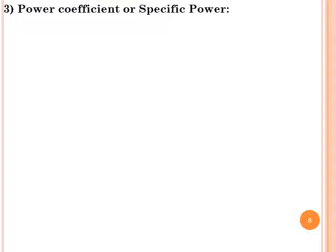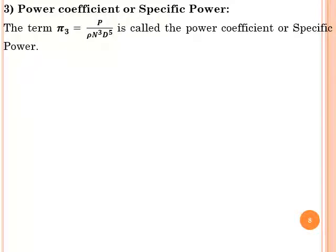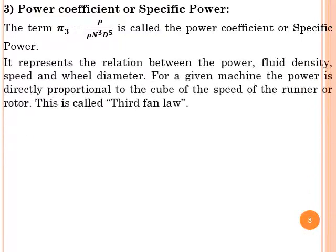The third Pi term is the power coefficient or specific power: π3 = P/(ρN³D⁵). It represents the relationship between power, density of the fluid, speed, and diameter of the wheel. For a given machine, power is directly proportional to the cube of the speed of the runner — this is the third fan law.